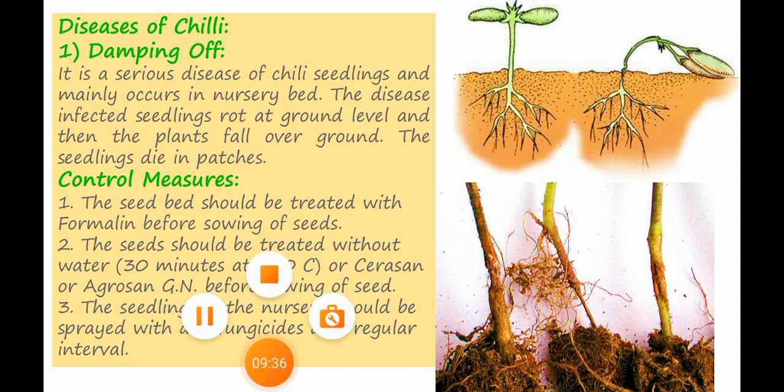Next are the diseases of chili. The first is damping off, a serious disease of chili seedlings occurring in two stages: pre-emergence and post-emergence. In the pre-emergence phase, young seedlings are killed before reaching the soil surface, and the radicle and plumule undergo complete rotting. In the post-emergence phase, infection occurs at or below ground level, and infected tissues appear soft and water-soaked. As the disease advances, the stem becomes constricted at the base and the plant collapses. The causal organism is Pythium debaryanum.